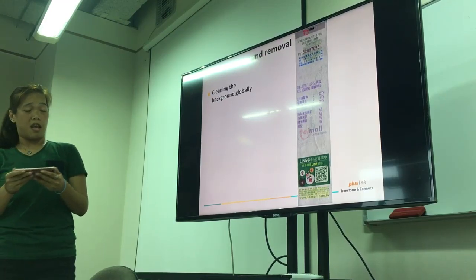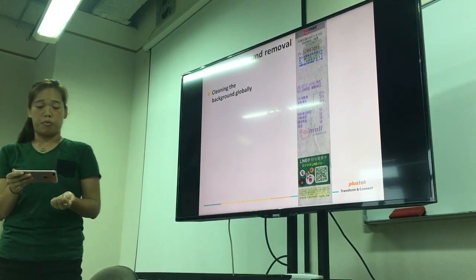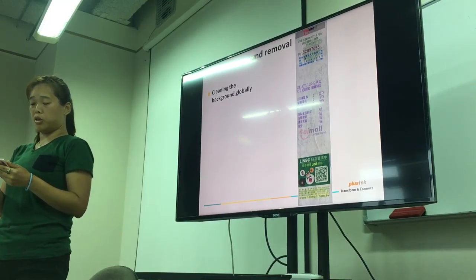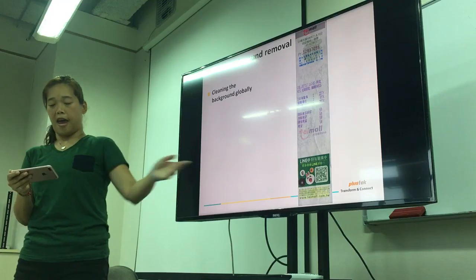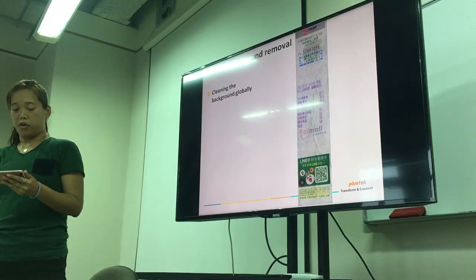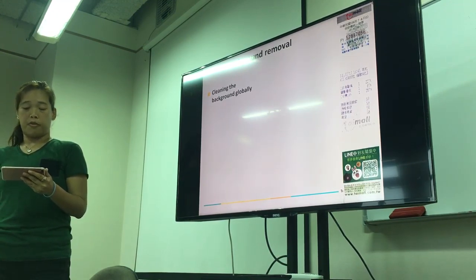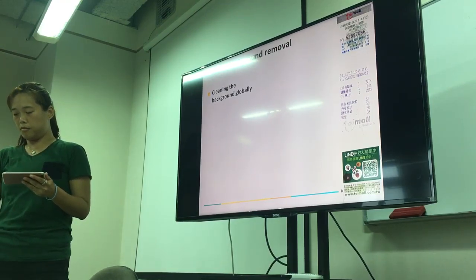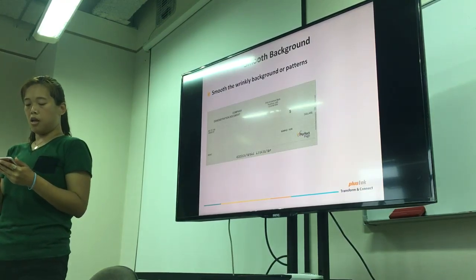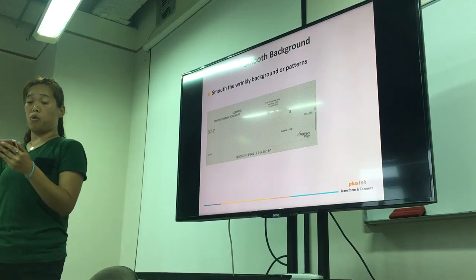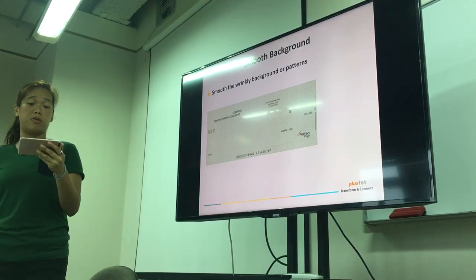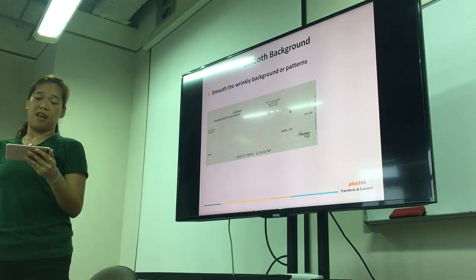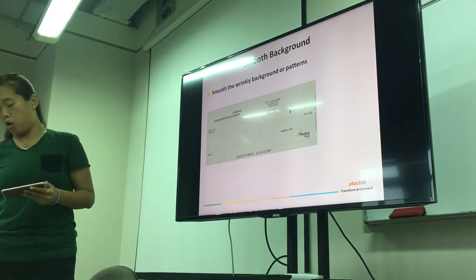This is an example of background removal. You can see the result on the right side — the invoice has a clean background. Smooth background: this feature could help smooth a uneven background and remove patterns on the background.